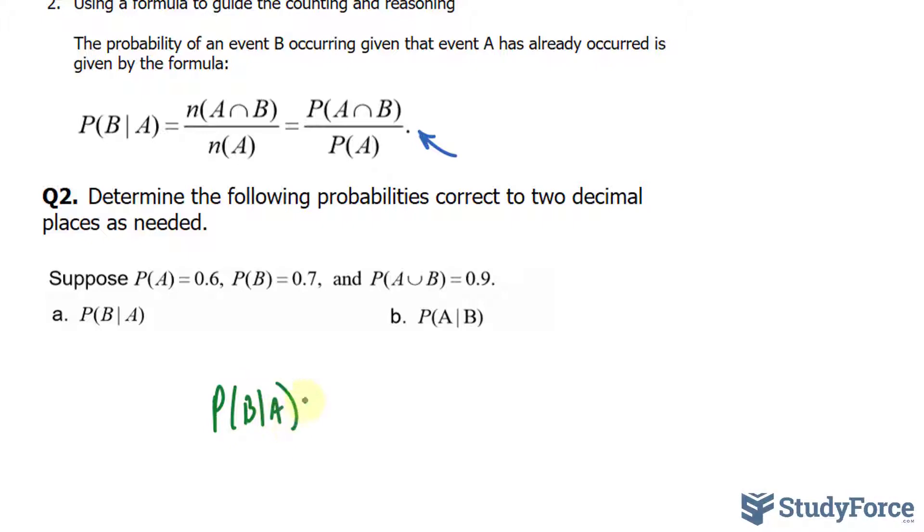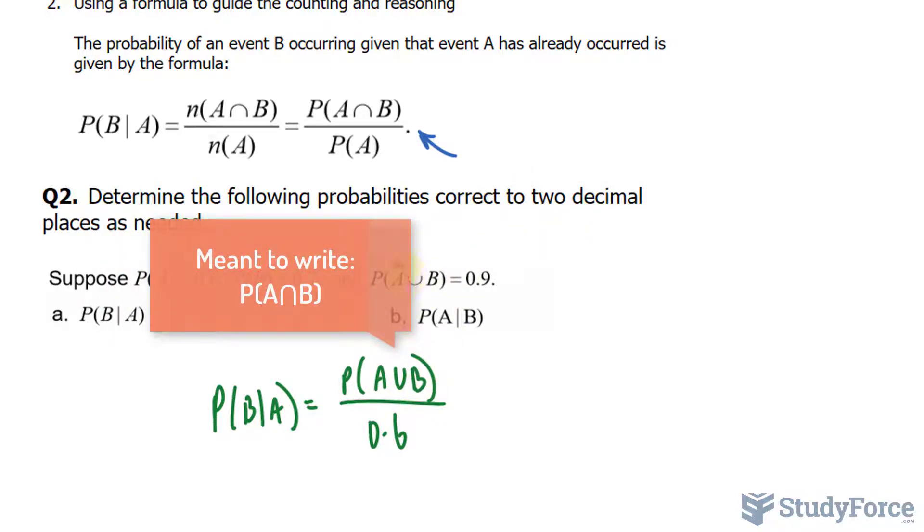Probability of B given A equals... The probability of A is 0.6. At the top, we have the probability of A intersecting with B. The relationship between union and intersection is the following.